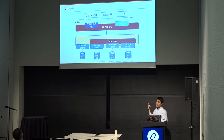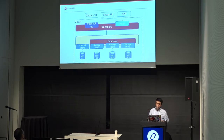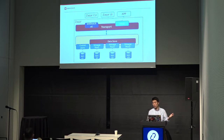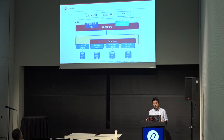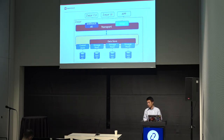This is the architecture of Zaqar. There is a transport layer — currently the transport is an HTTP implementation, and on top of that it can support WebSocket and WSGI. With WebSocket you get better performance compared with the traditional WSGI HTTP approach. For the backend, currently it can support MongoDB as the very stable backend, and Redis. If you don't want to use any in-memory database, you can just use Swift.